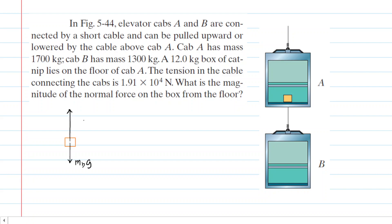So the normal force would be a force exerted by the elevator floor on that box. We're going to call that f sub n. Those are the only two forces acting on the box of catnip and now what we need to do is apply Newton's second law.